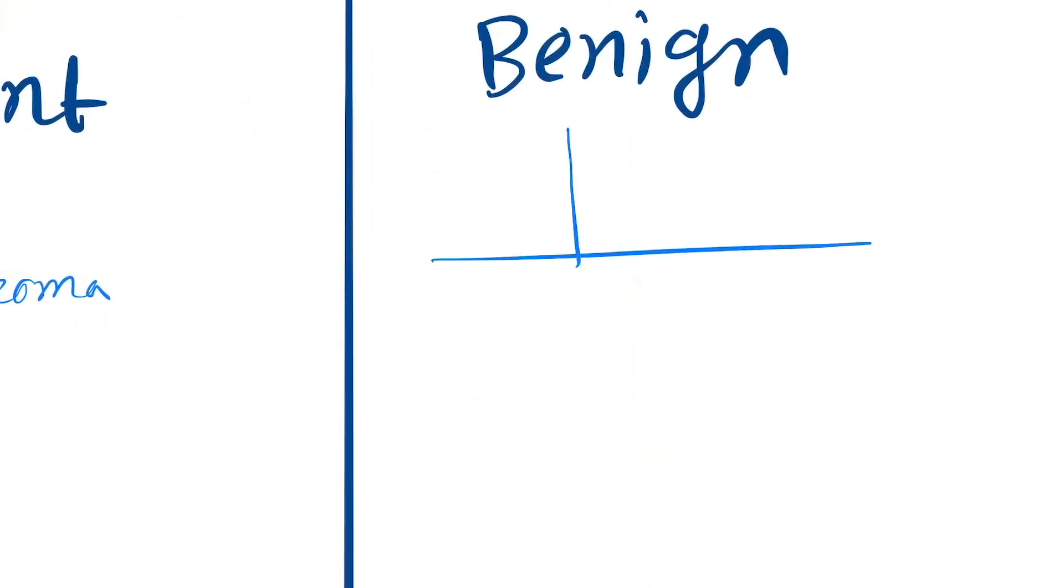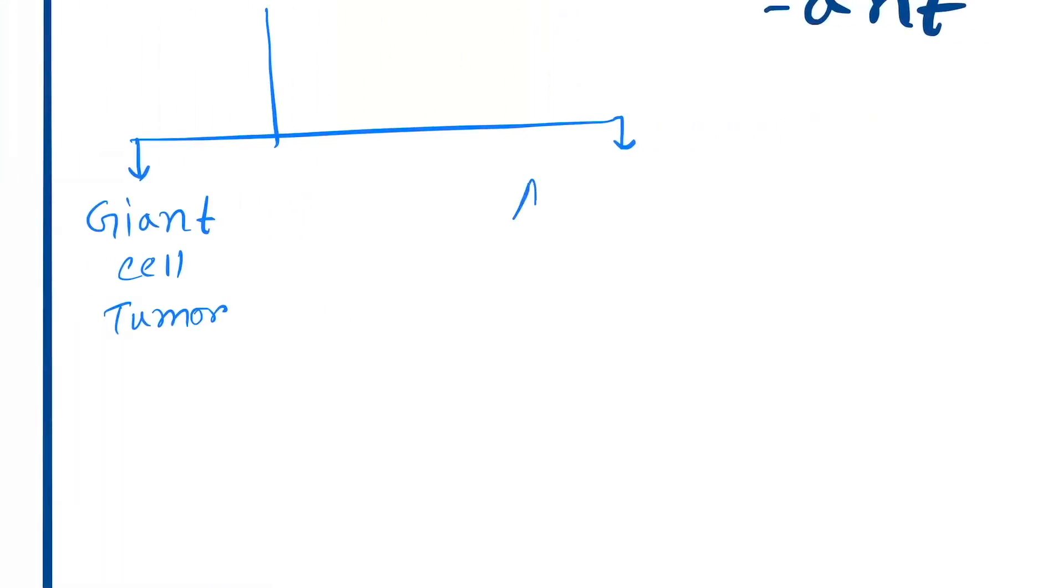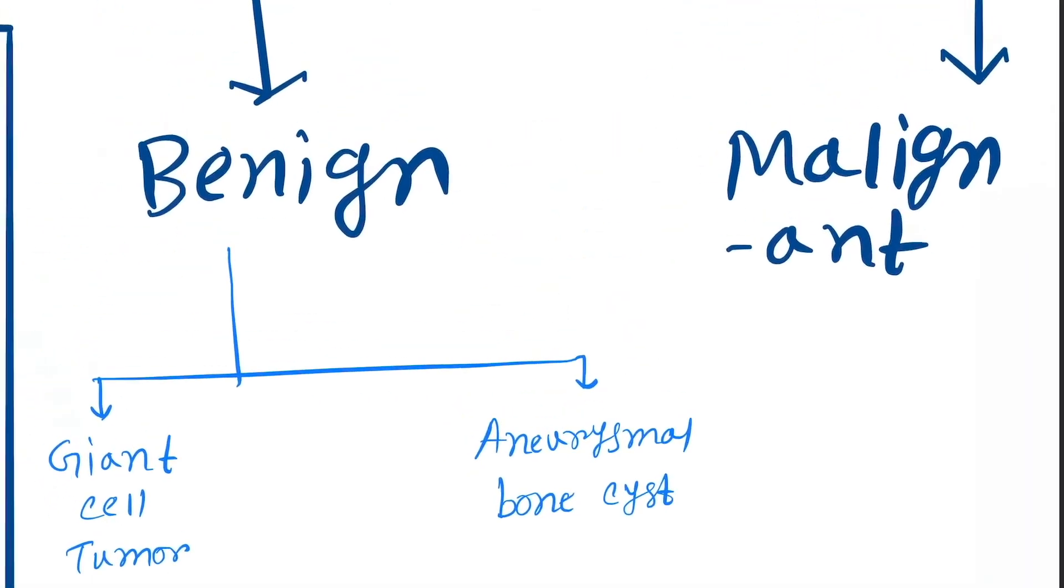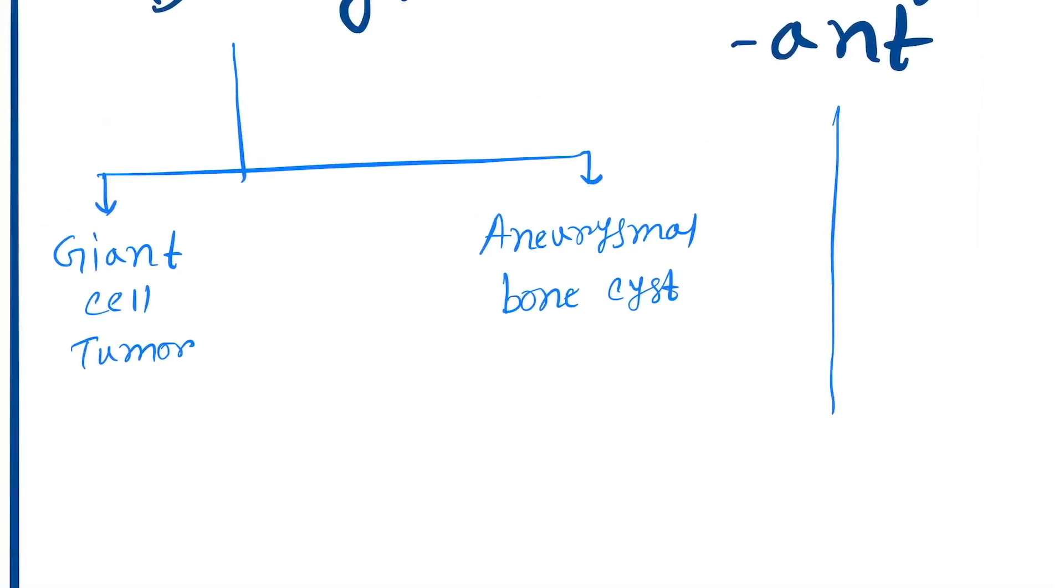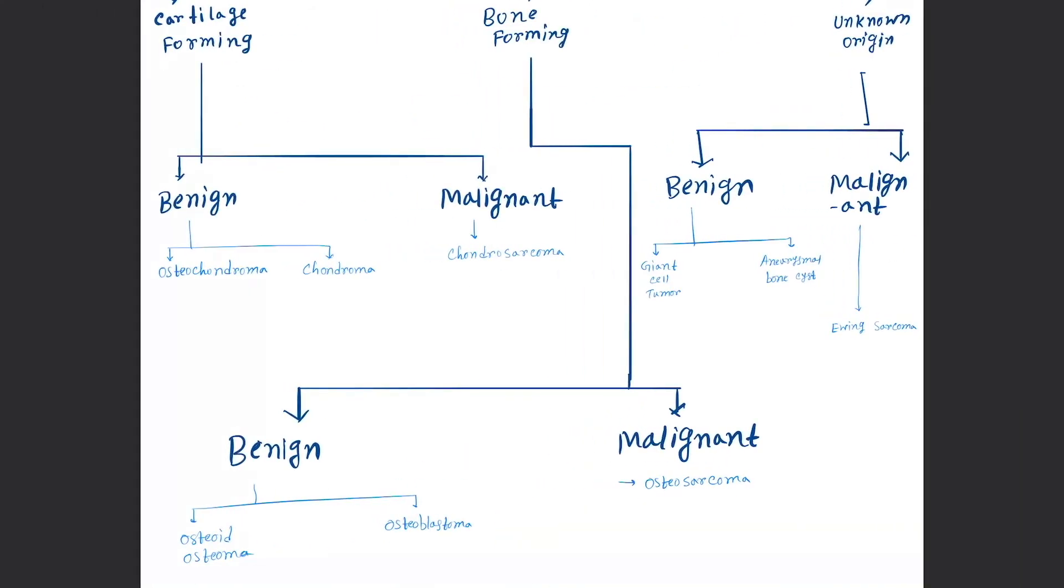Unknown origins, the benign tumors, there are two benign tumors. First one is giant cell tumor and another one is aneurysmal bone cyst. Malignant tumor is only one tumor, that is Ewing sarcoma.